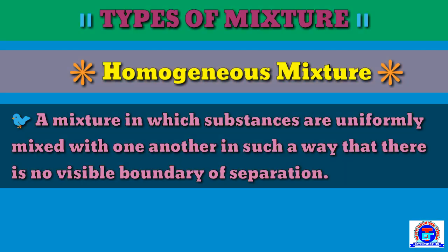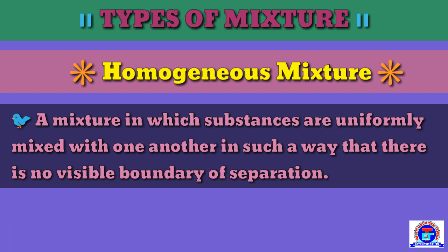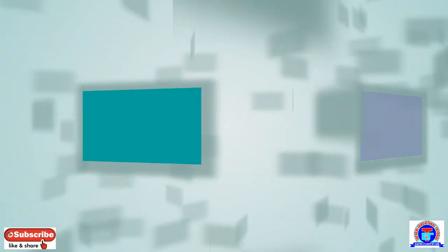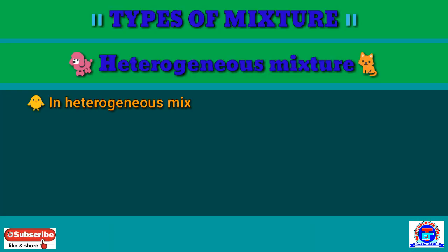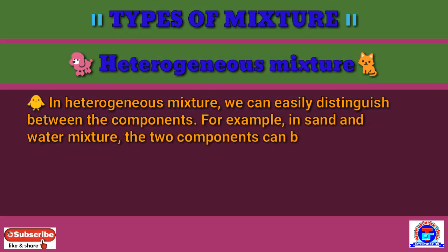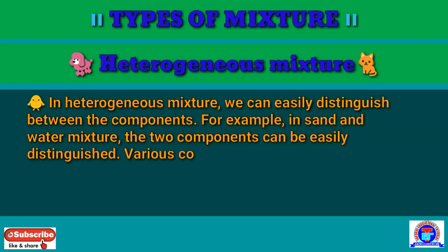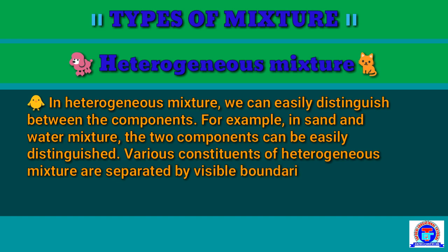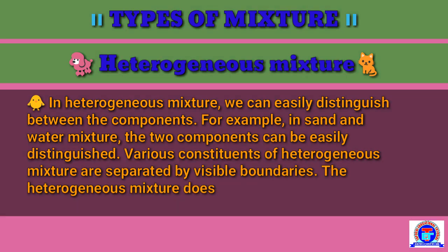I hope you understand homogeneous mixture and their examples. Now we understand the heterogeneous mixture. In a heterogeneous mixture, we can easily distinguish between the components — like in a sand and water mixture, the two components can be easily distinguished. Various constituents of a heterogeneous mixture are separated by visible boundaries.